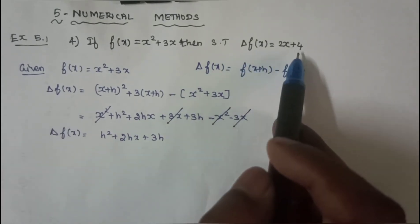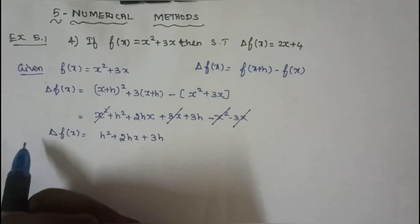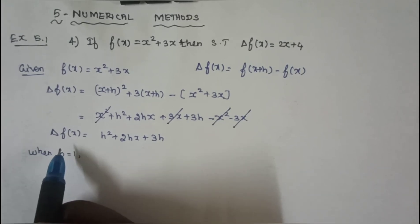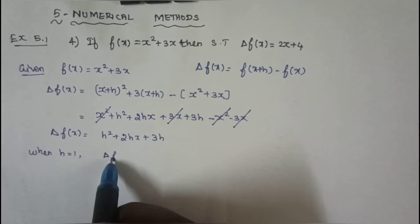To prove: delta f(x) equal to 2x plus 4. When h equal to 1, h equal to 1, put on delta f(x) equal to h square.